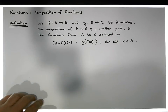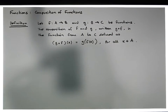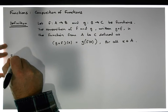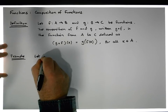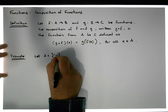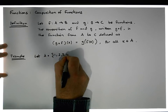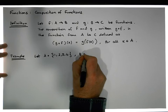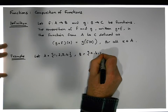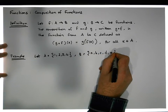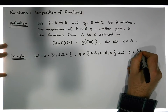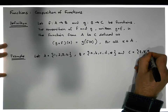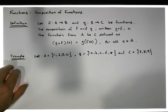Composition of functions is basically a mapping from one set, through another set, to a third set. Let's have a look at a particular example to keep things simple. Let the set A equal {1, 2, 3, 4}, let the set B equal {a, b, c, d, e}, and let the set C equal {7, 8, 9}.